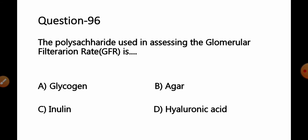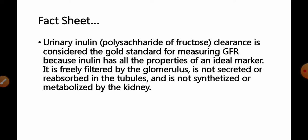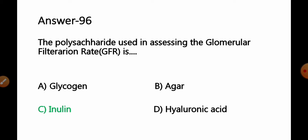Question 96: The polysaccharide used in assessing the glomerular filtration rate or GFR test is: A) Glycogen, B) Agar, C) Inulin, D) Hyaluronic acid. Fact: Urinary inulin, a polysaccharide of fructose clearance, is considered the gold standard for measuring glomerular filtration rate because inulin has all the properties of an ideal marker. It is freely filtered by the glomerulus, not secreted nor reabsorbed in the tubules, and is not synthesized or metabolized in the kidneys. Inulin, a polysaccharide of fructose, is used in assessing GFR. Option C, inulin, is the correct answer.